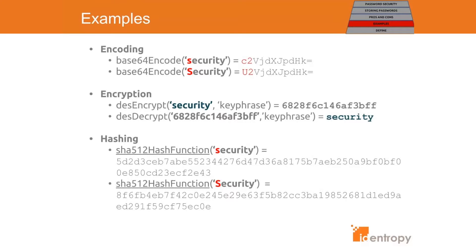So now let's take a look at this in action. First let's encode the word 'security' once with a lowercase 's' and again with an uppercase 'S'. You'll see that the results are almost identical except for the first two characters. Those two characters make up the base 64 representation of the first letter. It's clear that this is just a character-by-character translation into a different format and the data is not actually secured in any way.